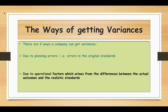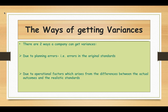The second type arises due to operational factors, which comes from the differences between the actual outcomes and the realistic standards. Operational variances occur, for example, if there is a general price increase in the labour market, or material price increases due to shortage of material supply, or within the organisation — inefficient purchase of raw materials, machine breakdown, power failure, etc. Operational variances are generally controllable. Therefore performance measurement must be based on operational variances.